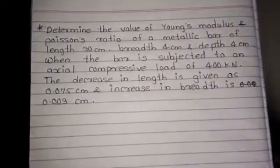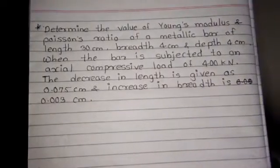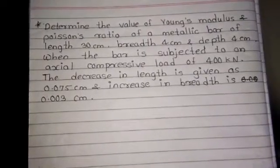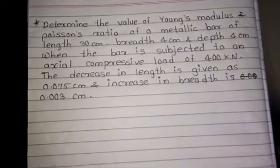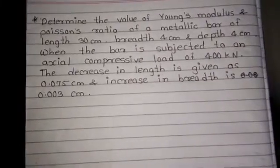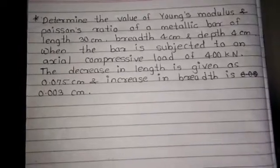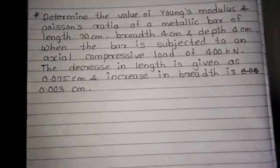Today's question determines the value of Young's modulus and Poisson's ratio of a metallic bar of length 30 cm, breadth 4 cm and depth 4 cm. When the bar is subjected to an axial compressive load of 400 kN, the decrease in length is given at 0.075 cm and increase in breadth is 0.003 cm.